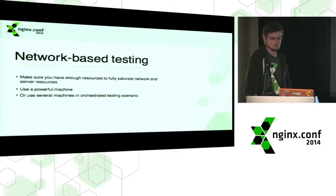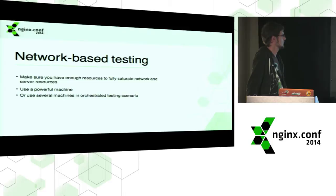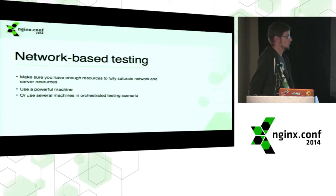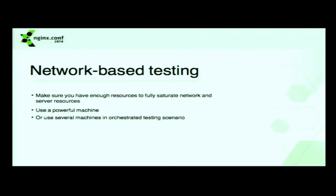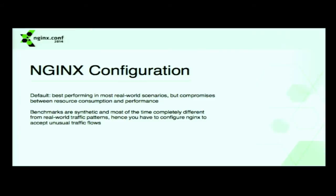When doing network-based testing where machines are connected to some network infrastructure, you need to make sure you have enough resources to fully saturate your environment. If you don't have enough machines attacking your server, you won't have a lot of load on your server. Ways to mitigate that include using a really powerful machine to run your client, or using less powerful machines in an orchestrated scenario.